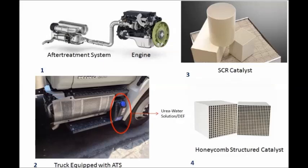In the first figure you can see the after treatment system attached to the engine exhaust. In the second figure at the bottom you can see a truck equipped with an after treatment system, where a can is shown with a circle mark — this is the urea water solution, also known as diesel exhaust fluid. In the third figure you can see a typical SCR catalyst. All the catalysts look almost the same with a honeycomb structured core, but the material and properties will vary from one catalyst to another.